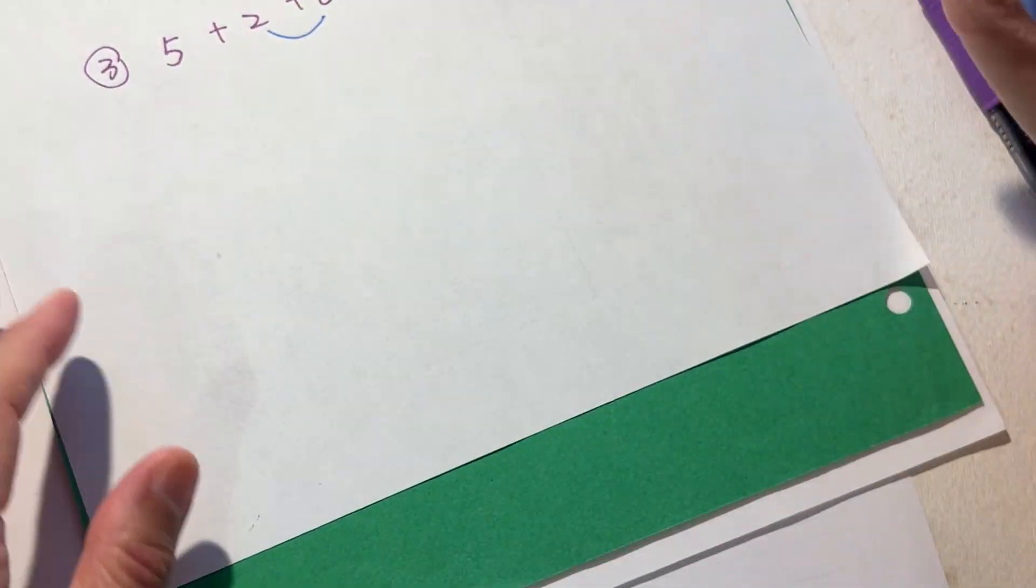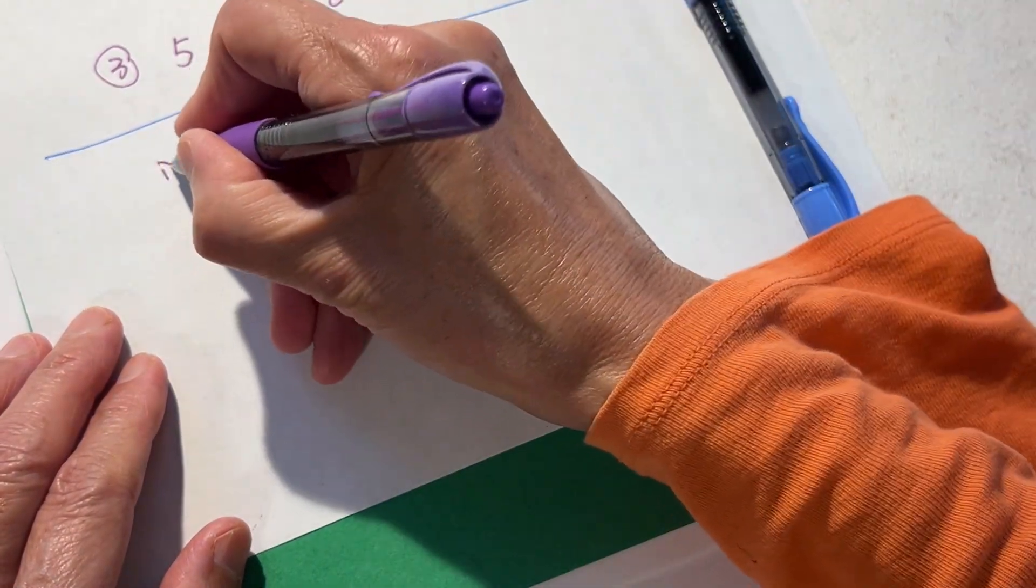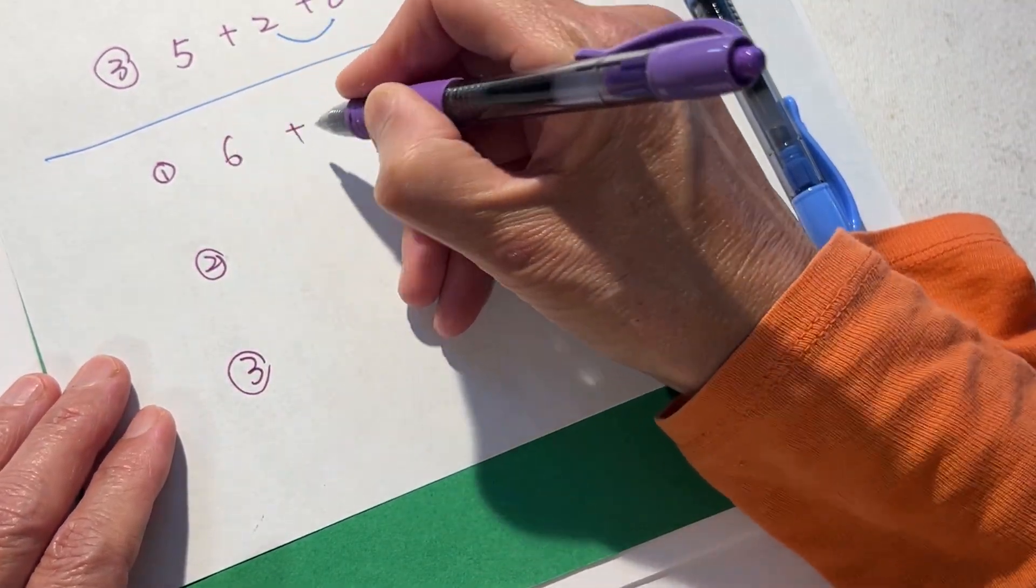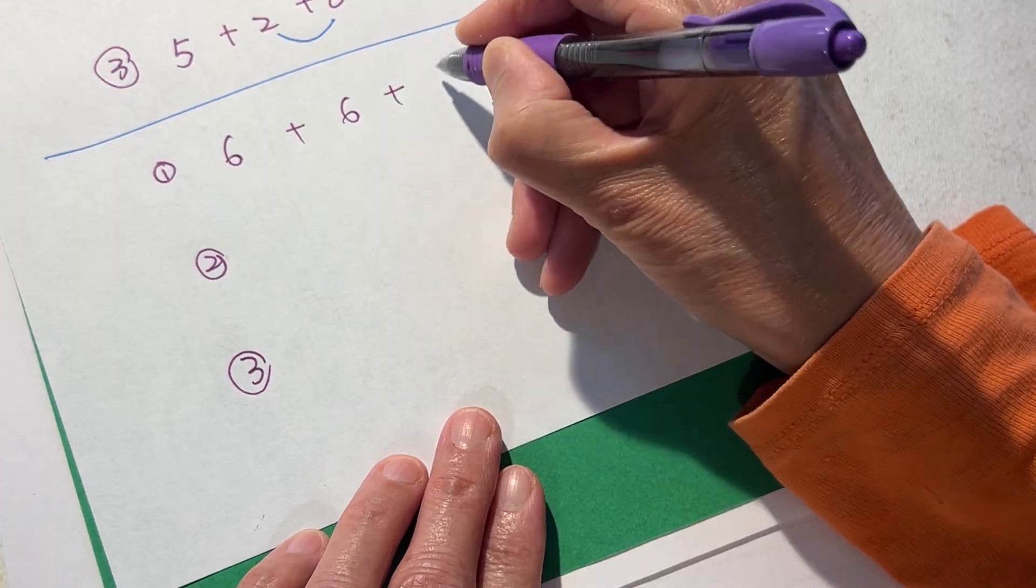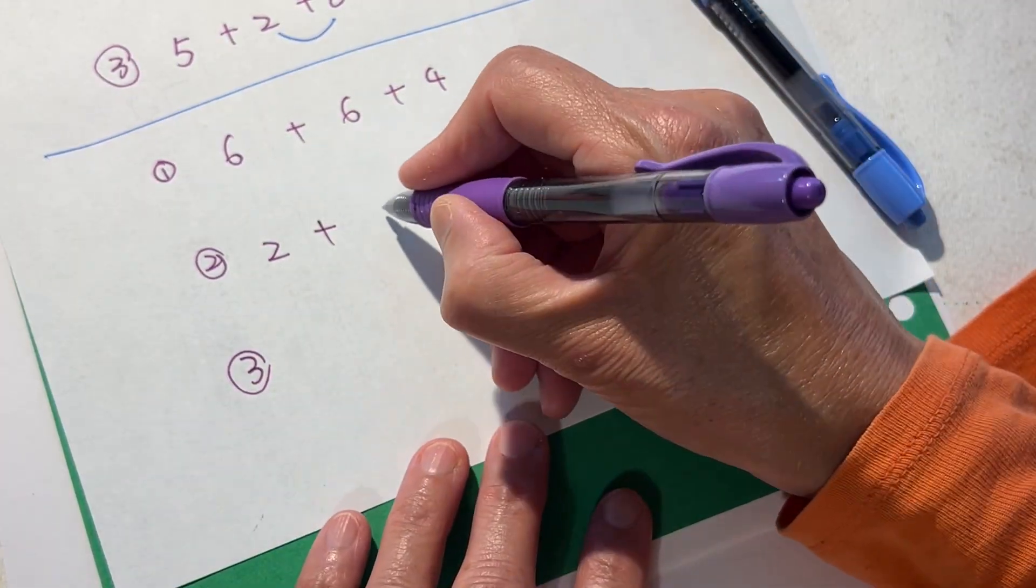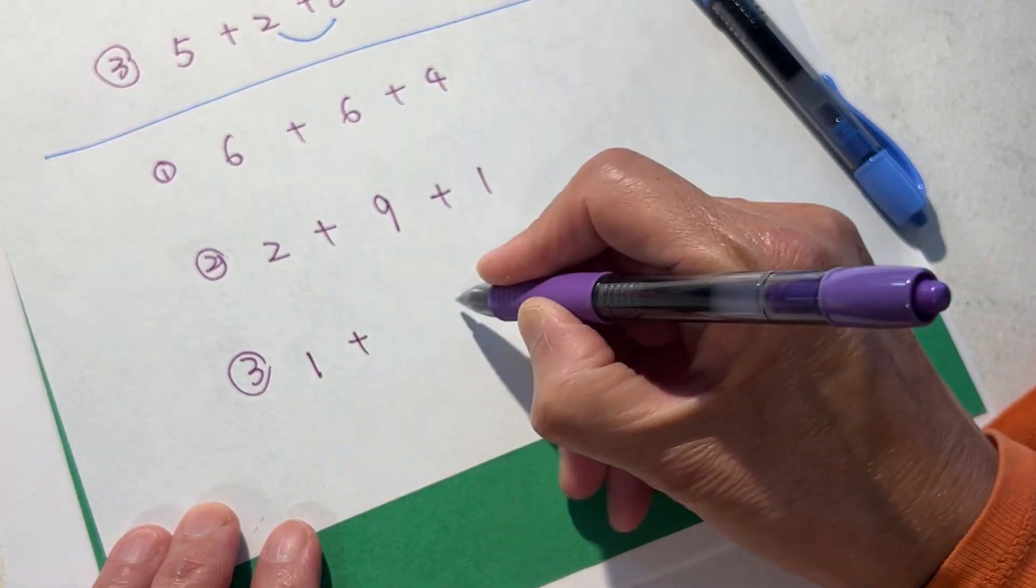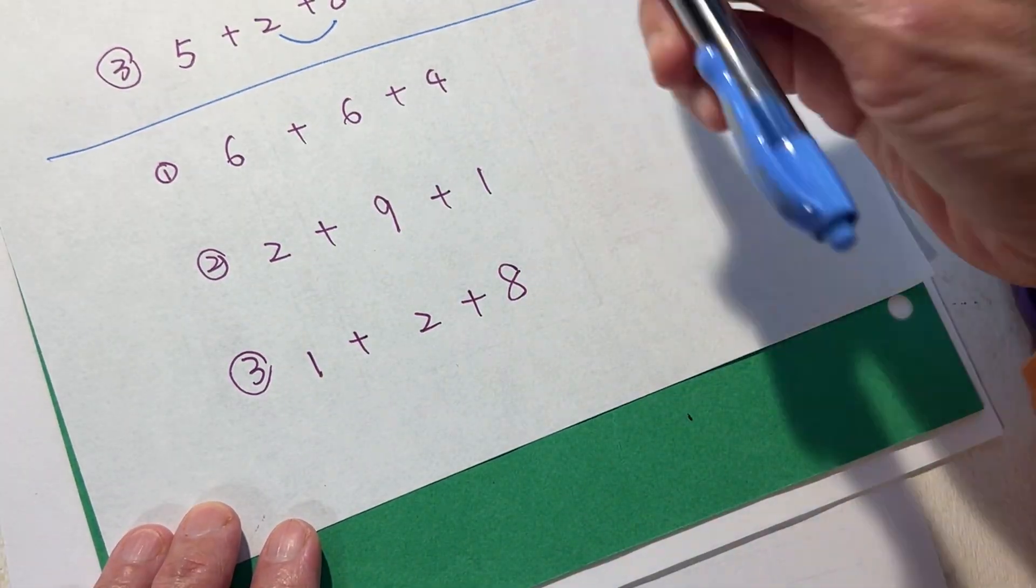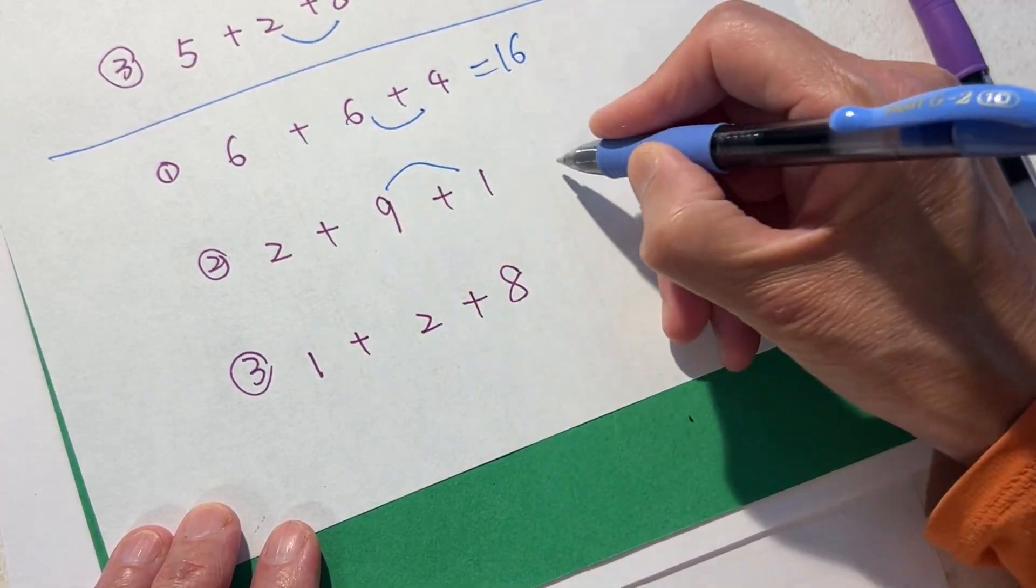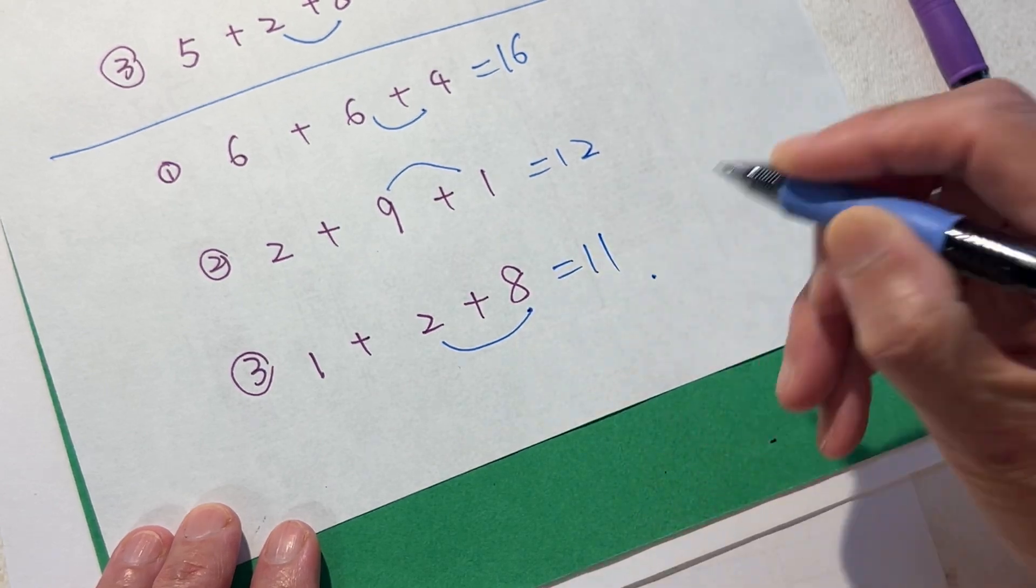So a lot of time I do this. Let's do another one, keep on doing one. Each time three questions. 6+6+4, 2+9+1, 1+2+8. So sixteen, twelve, eleven, right?